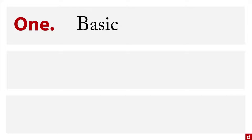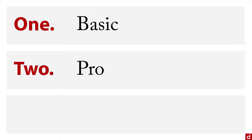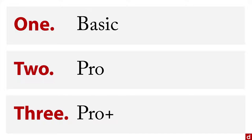Now you've got a few different choices. Number one, there's the basic plan — that's the one you start with by default. Number two, there's something called the pro plan. And three, there's the pro plus plan. One of the most significant differences between these is the price.